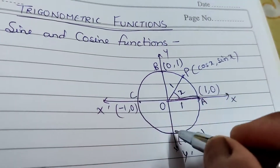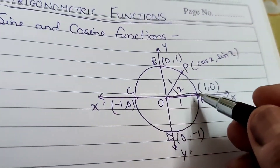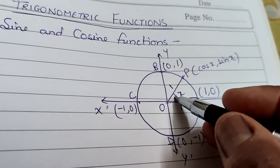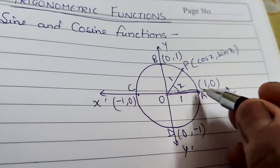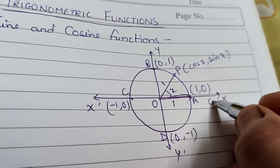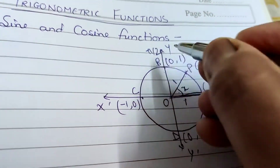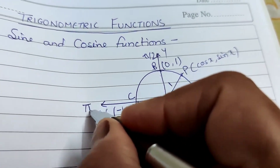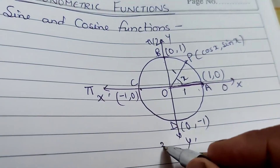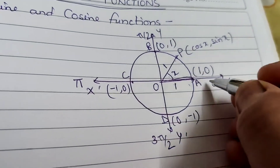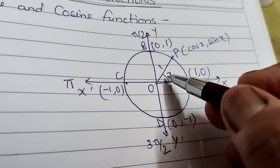Point P moves from A to P, making an angle x. Here, 0° is at the starting position, 90° (π/2) is at the top, 180° (π) is at the left, 270° (3π/2) is at the bottom, and the complete angle is 360° (2π).